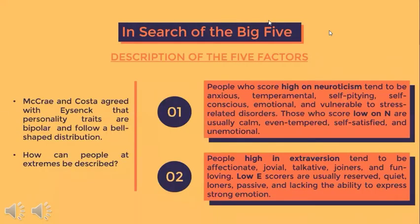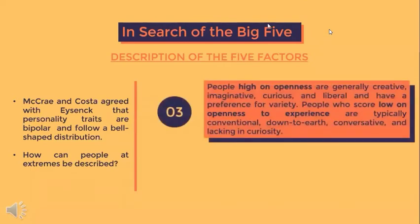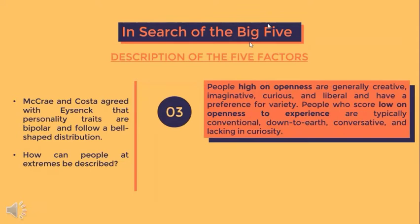Extroversion indicates how outgoing and social a person is. People high on extroversion tend to be affectionate, jovial, talkative, joiners, and fun-loving. Low extroversion scorers are usually reserved, quiet, loners, passive, and lacking in gregariousness. Openness to experience indicates how open-minded a person is, distinguishing people who prefer variety from those who have a need for closure and gain comfort in familiar people and things. People high on openness are generally creative, imaginative, curious, and liberal with a preference for variety, while those low are typically conventional, down-to-earth, conservative, and lacking in curiosity.